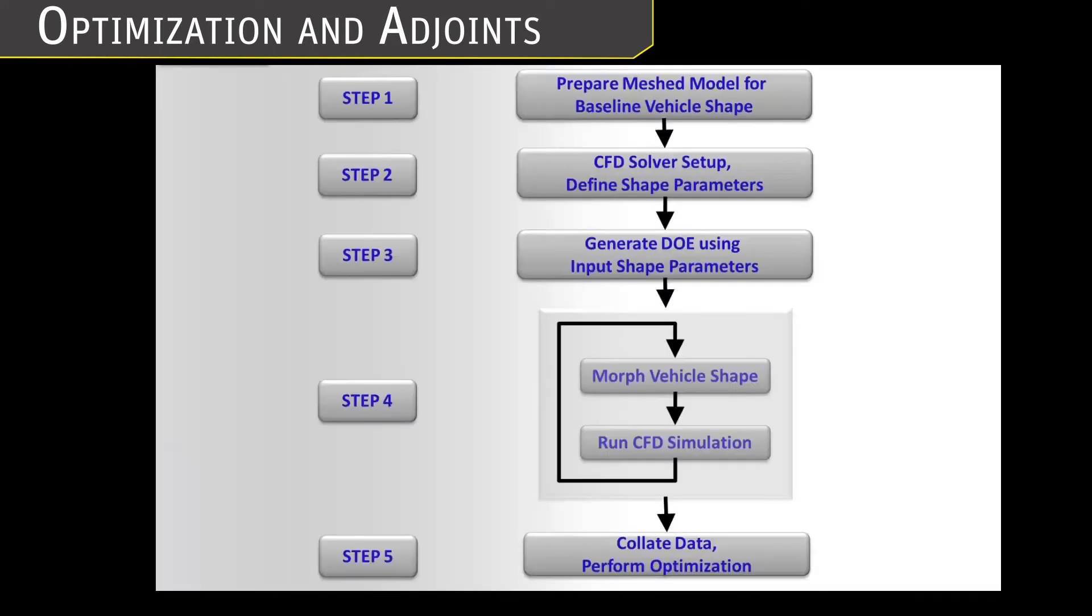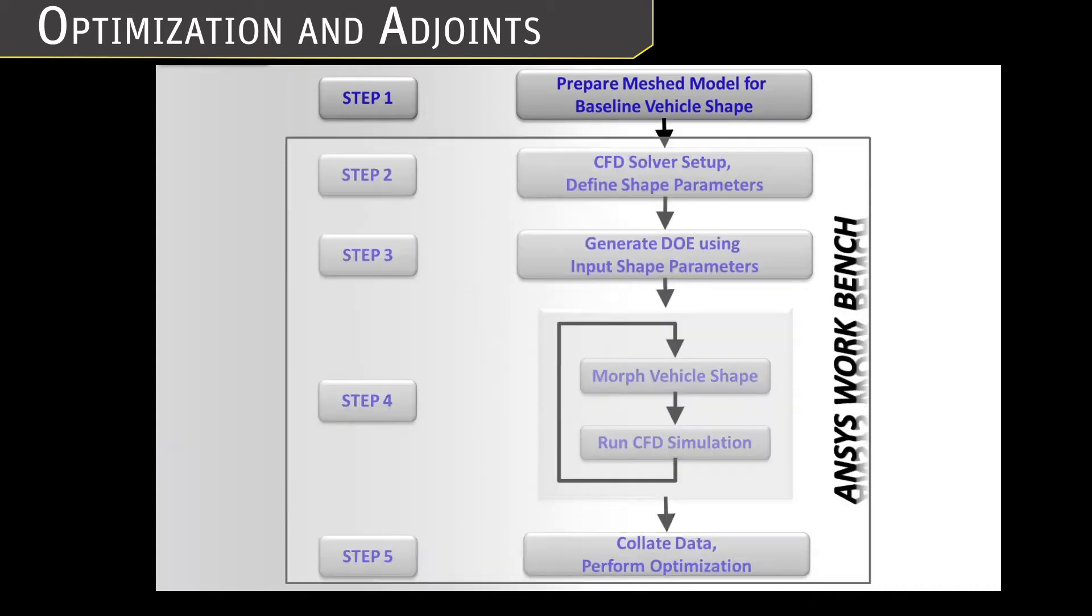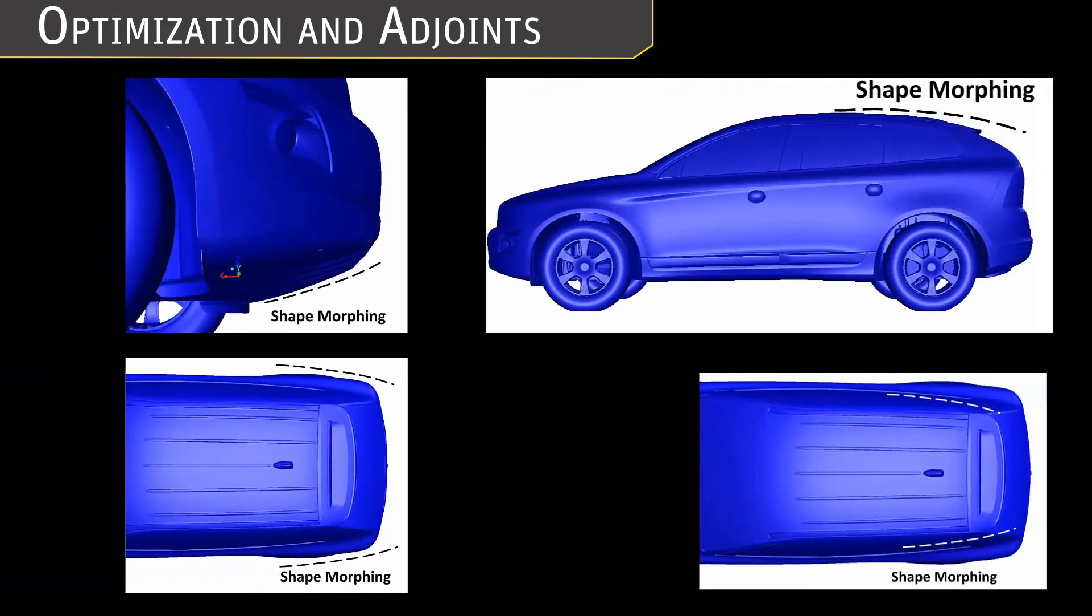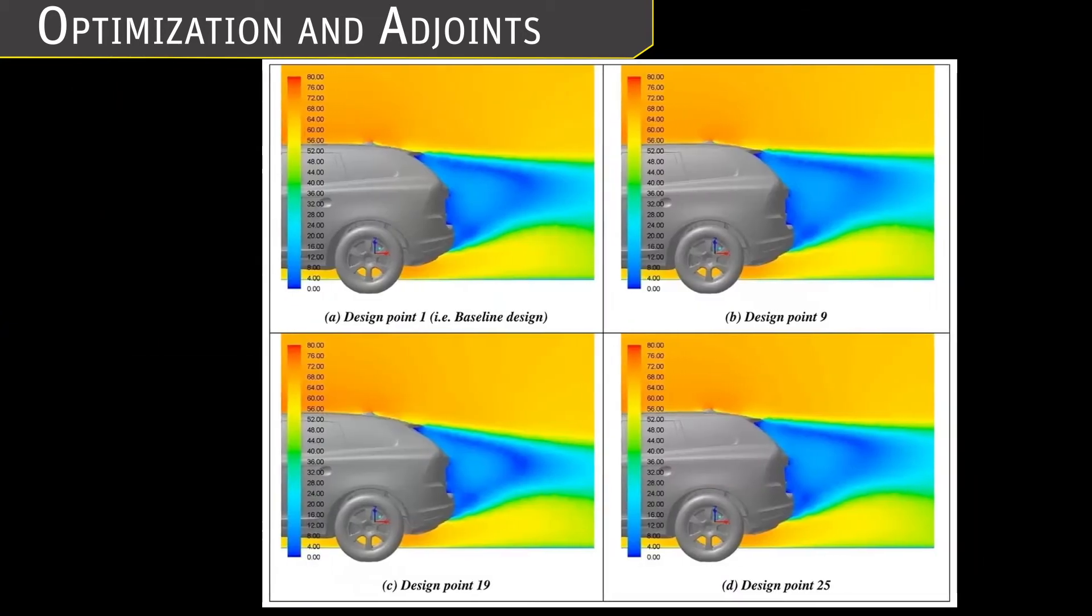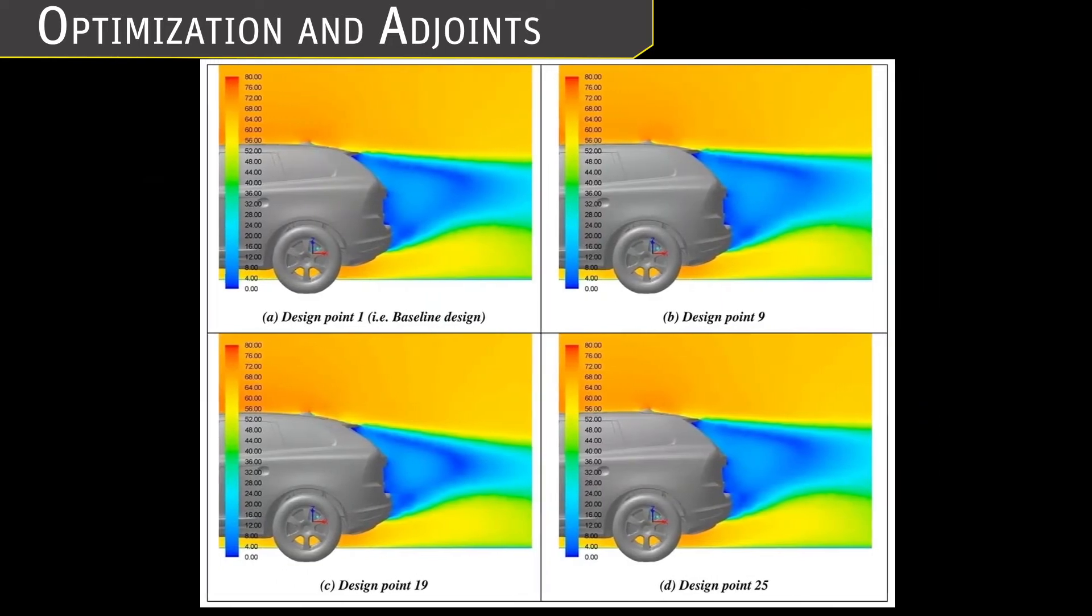By combining streamlined workflows with high-performance computing, ANSYS has literally made the process of extensive design exploration a one-click task. In this recent example, an engineer started with one vehicle shape and let the ANSYS tool automatically morph the vehicle to evaluate aerodynamic drag for 50 different shape variants, all with only one click.